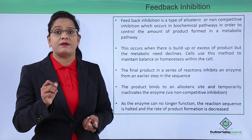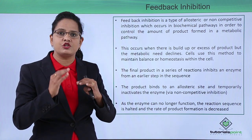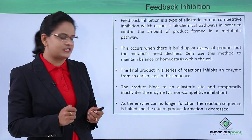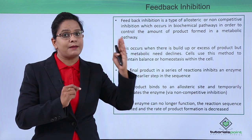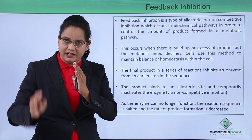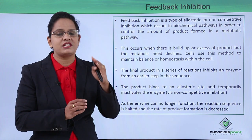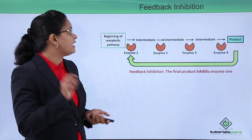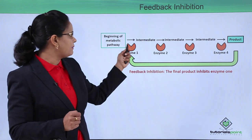Cells use feedback inhibition to maintain balance, keeping each chemical in an appropriate amount. The final product inhibits an enzyme from an earlier step by binding to its allosteric site. For example, in a pathway A → B → C → D → E, if E is produced in excess, E binds to the enzyme converting A into B, stopping that enzyme's activity and halting the entire reaction. This is clearly shown in the diagram where the product binds to the allosteric site of enzyme 1, stopping the pathway.